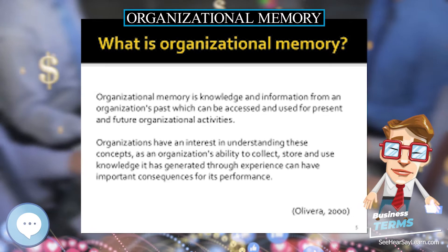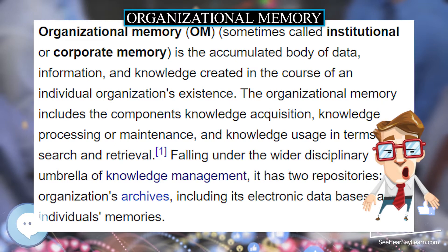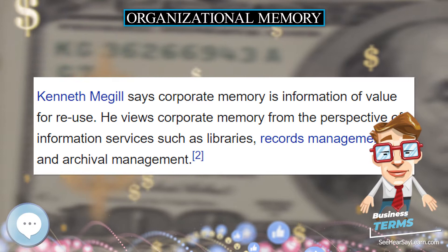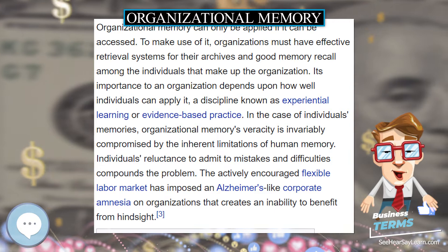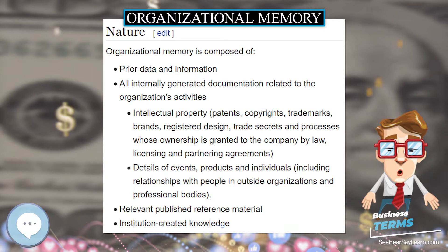It is important to understand the differences between each of these. Data is a fact depicted as a figure or a statistic, while data in context, such as in a historical time frame, is information. By contrast, knowledge is interpretative and predictive. Its deductive character allows a person with knowledge to understand the implications of information and act accordingly.